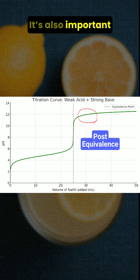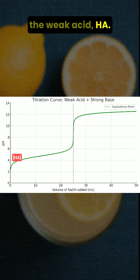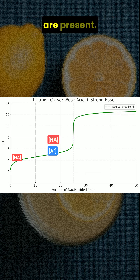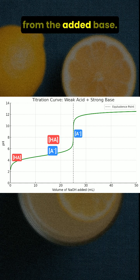It's also important to know the major species present at different stages of the titration. At the beginning it's mostly the weak acid, HA. In the buffer region both HA and A- are present. At the equivalence point it's only A-. Beyond the equivalence point it's excess OH- ions from the added base.